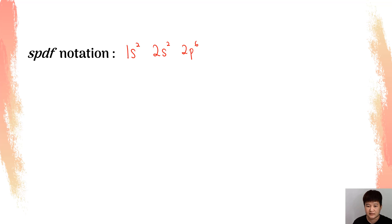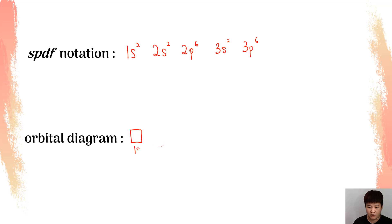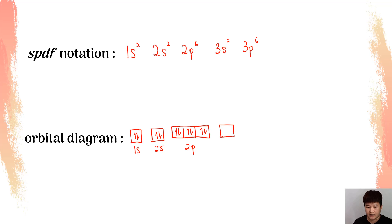As a conclusion, the full spdf notation looks like: 1s² 2s² 2p⁶ 3s² 3p⁶. The orbital diagram has every box labeled with the correct orbital: 1s with 2 electrons, then 2s with 2 electrons, then 2p with three orbitals and 6 electrons maximum, then 3s — make sure you label them — and then 3p. That is your spdf notation and orbital diagram.